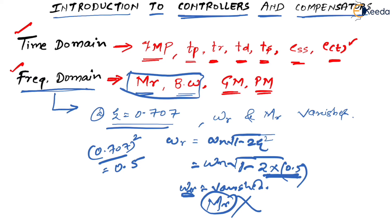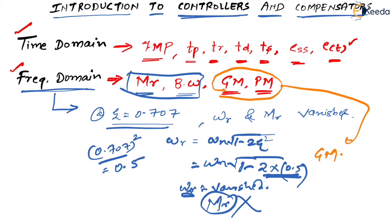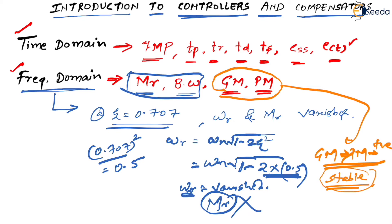Now, another thing: GM and PM — when GM and PM are both positive, in such a case we say that the system is stable. So GM and PM are important for us from the point of view of stability.